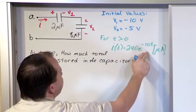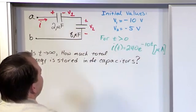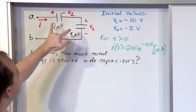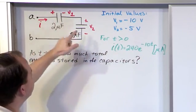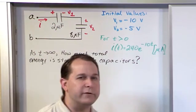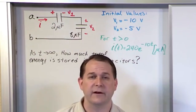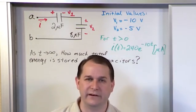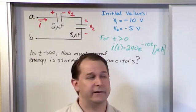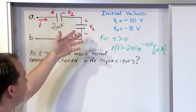The current goes to zero as T goes to infinity because this term drops to zero, and then there's some final value of voltage on these capacitors. And then once we know the final value of those voltages on those capacitors, it's just one half times C times V squared to get the individual energy storage.